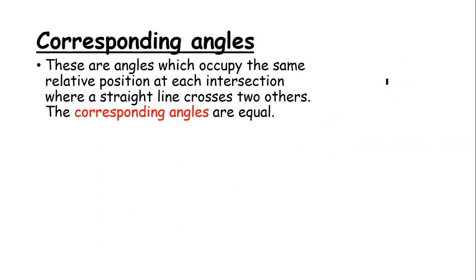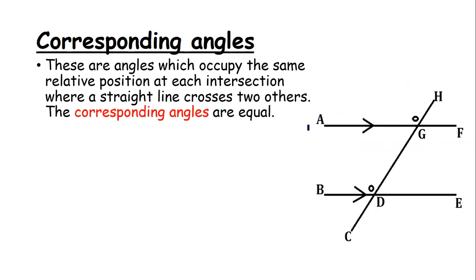Corresponding angles — these are angles which occupy the same relative position at each intersection where a straight line crosses two other parallel lines. So we have corresponding angles when we've got parallel lines like AF and ABE, and then we draw a transversal HC.